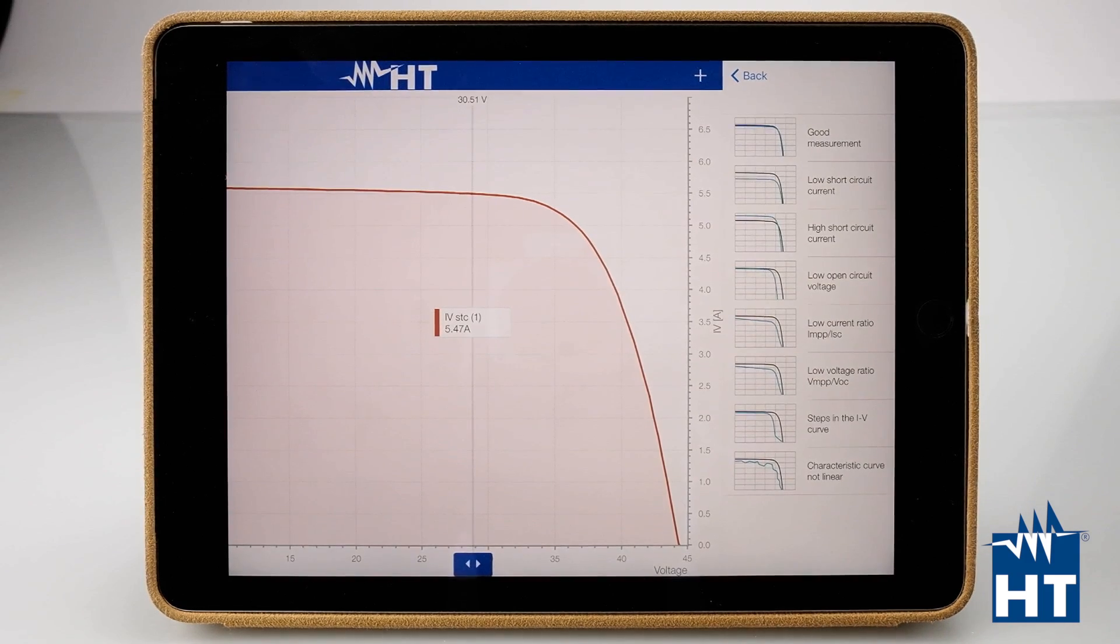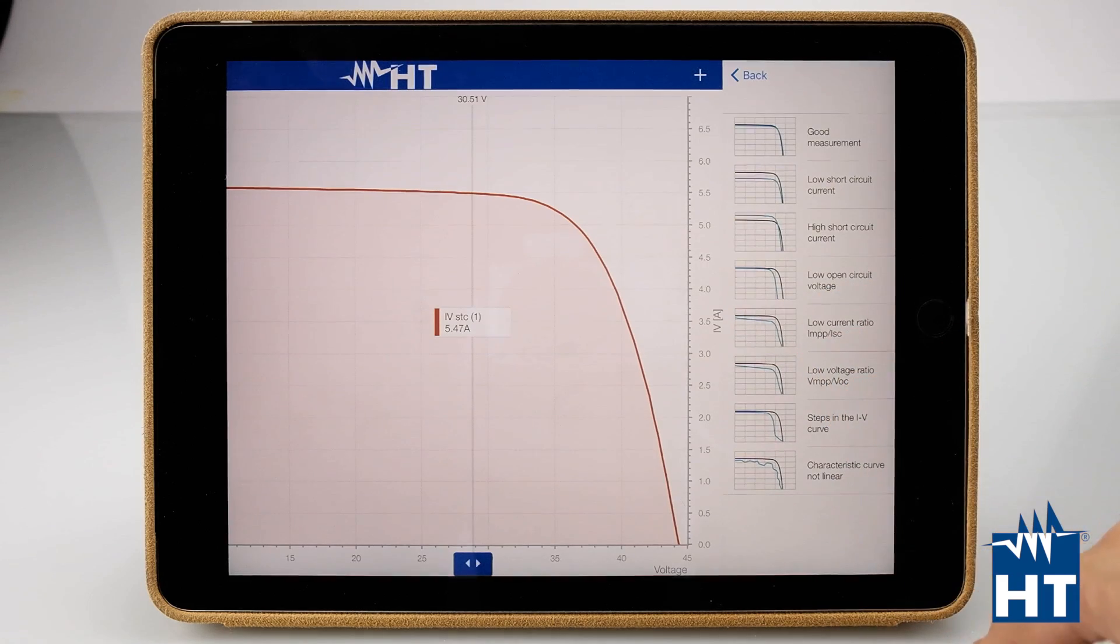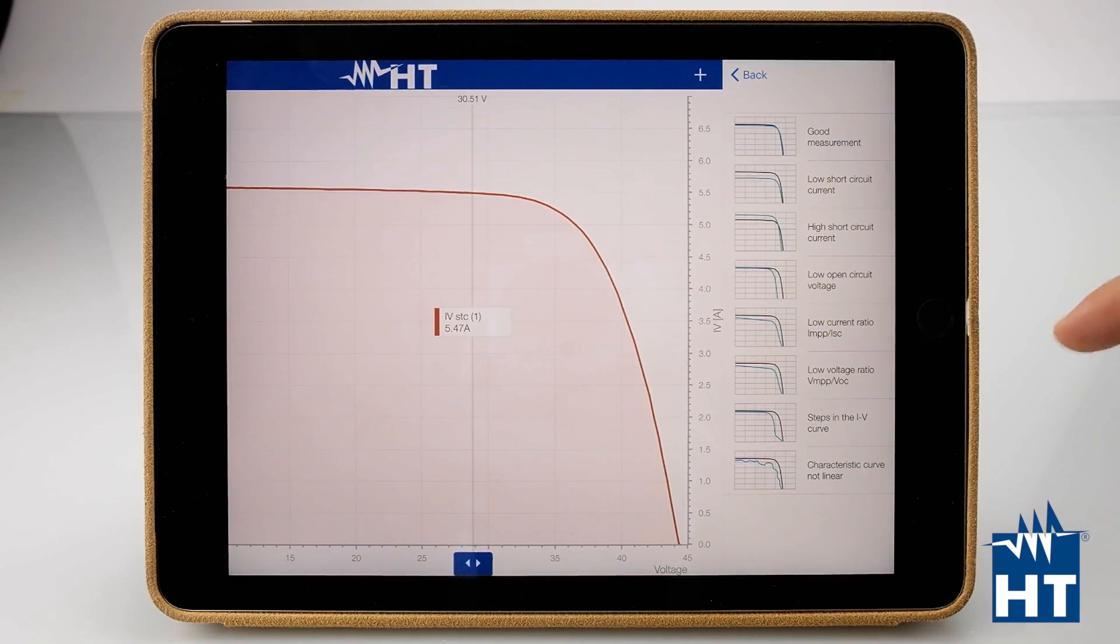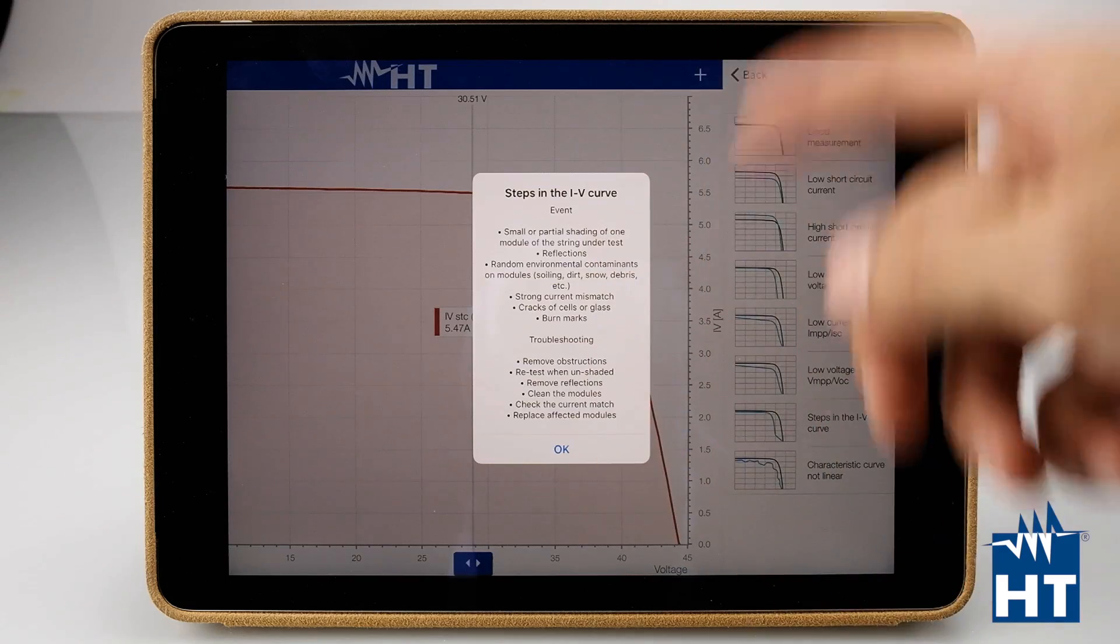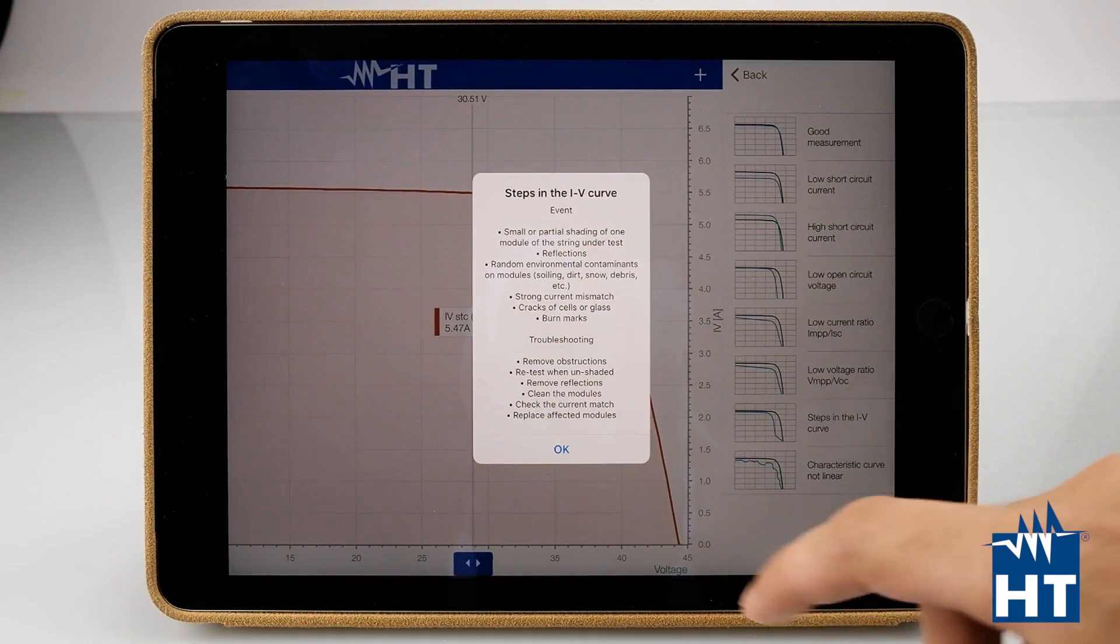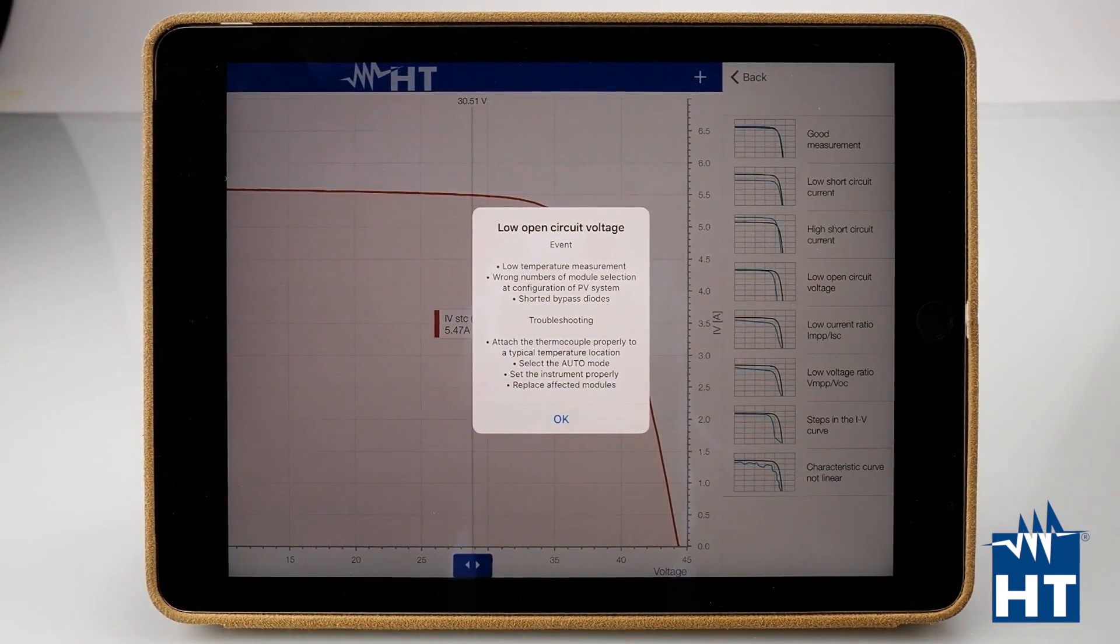We have two curves. The black one is the manufacturer curve and the one below is our measured curve. For example, if I have this kind of curve, the app tells us which kind of problem we may have. Small or partial shading of one module of the string under test, reflections, random or environmental combinations like dirt or snow. Strong current mismatch or crack or cell or burn marks. So here with wiki you can find the more common problems and it will be very easy to find your solution.